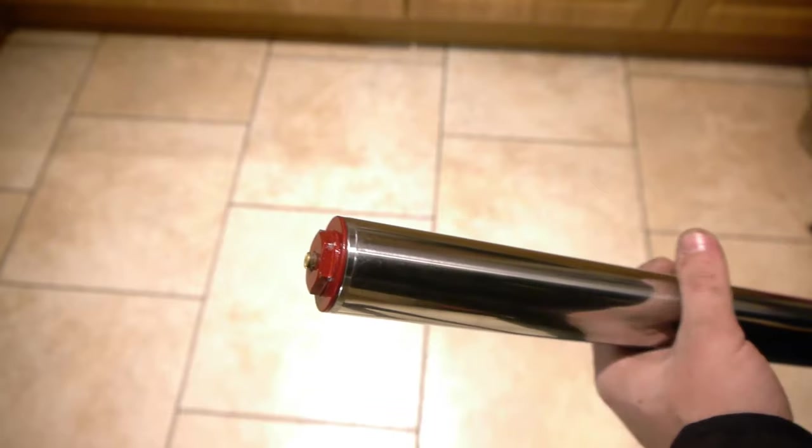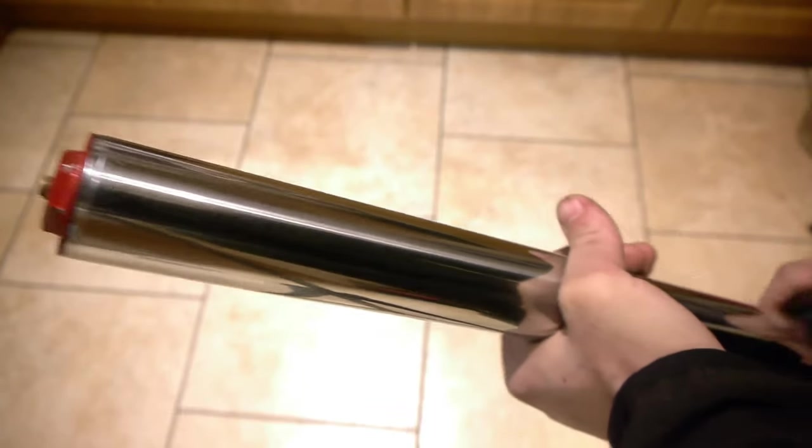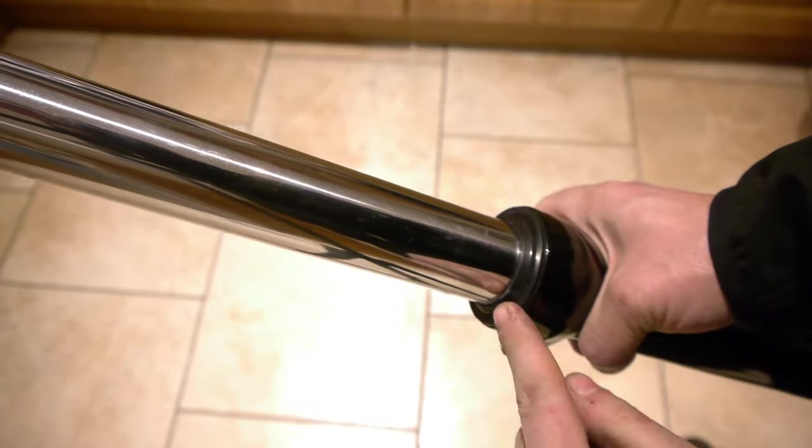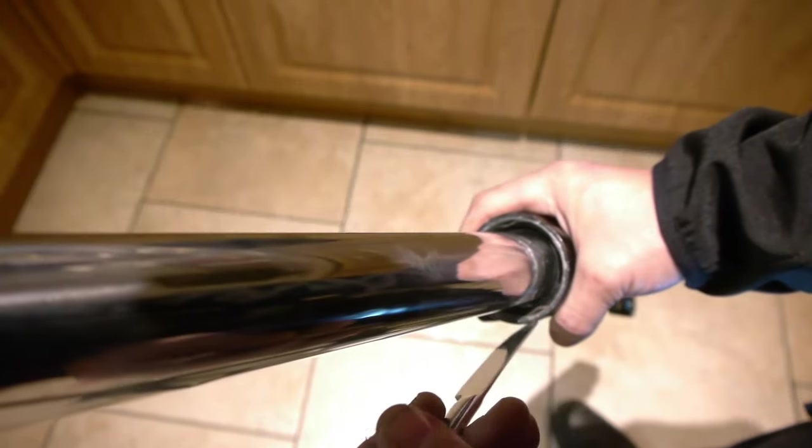So once you've done that and removed the fork, next job is to pull out the top dust seal. Next job is to pull out a little clip in here that holds in the lower seal, the main seal. I don't know if you can see it on camera there, there's just a little loop in it. We're going to put a screwdriver or something in to pry it out.